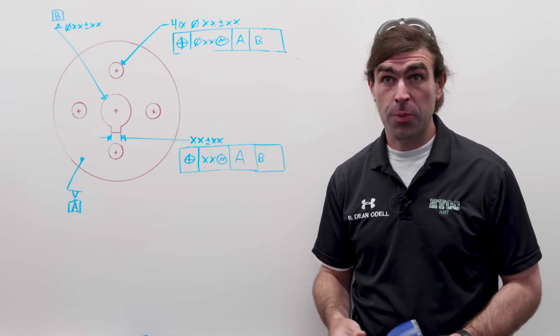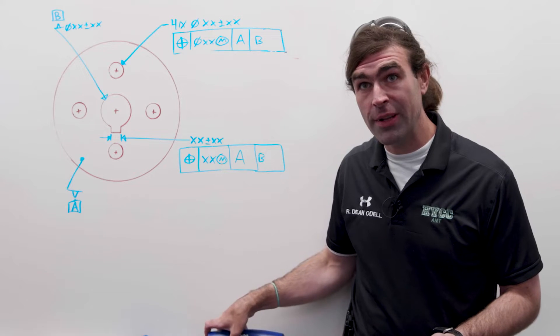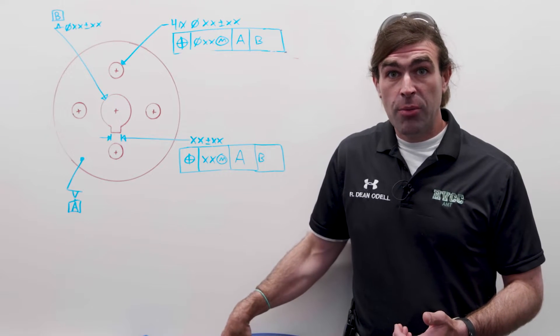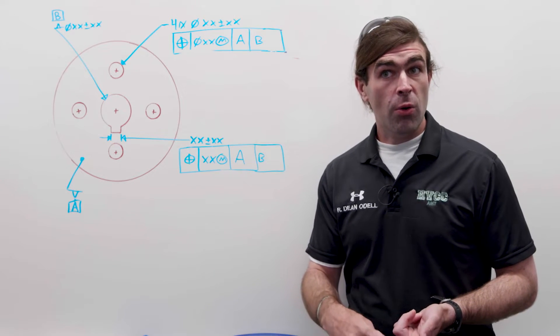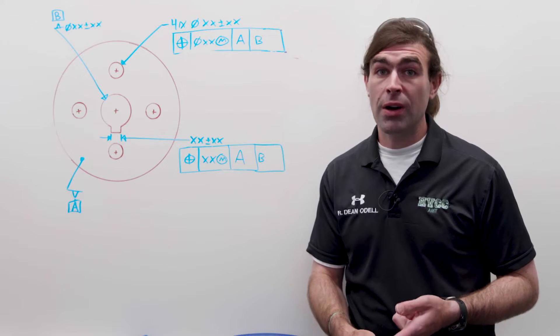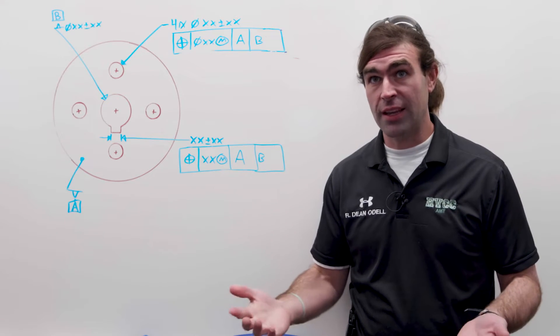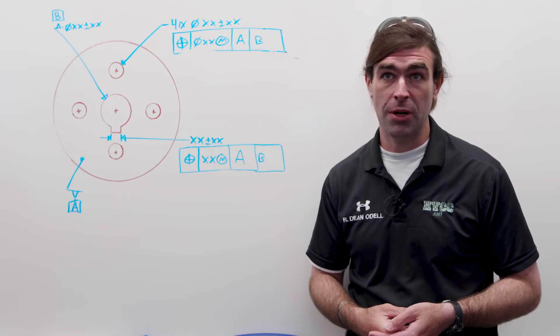Why this is, I'm not 100% sure, but those are the rules. So simultaneous requirements can apply to datum references at RMB or MMB, but you can only use separate requirements if at least one of the datum references is at MMB. So that gives you the capability to use two separate gauges.